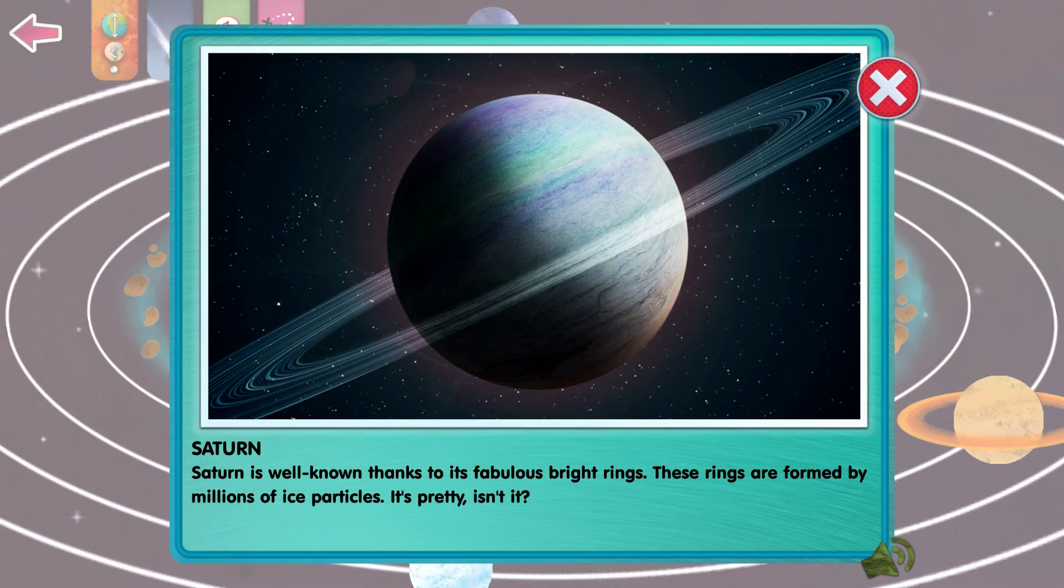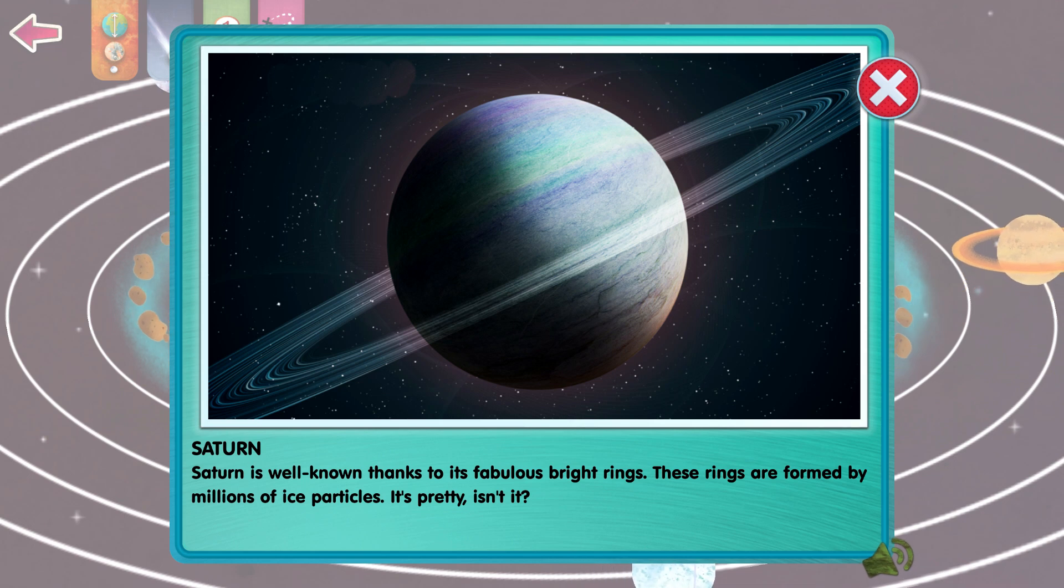Saturn is well-known thanks to its fabulous bright rings. These rings are formed by millions of ice particles. It's pretty, isn't it?